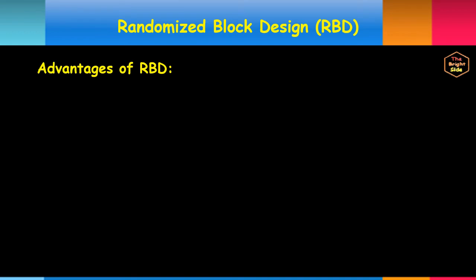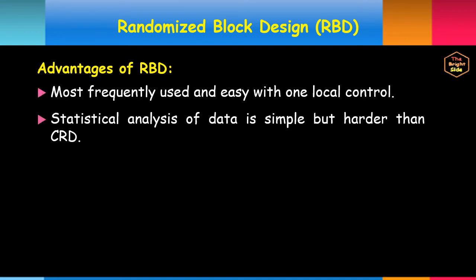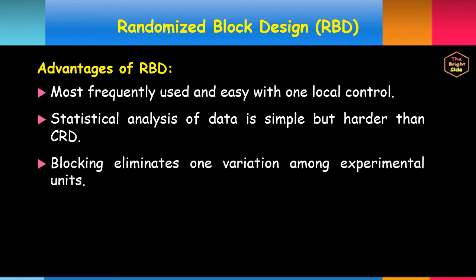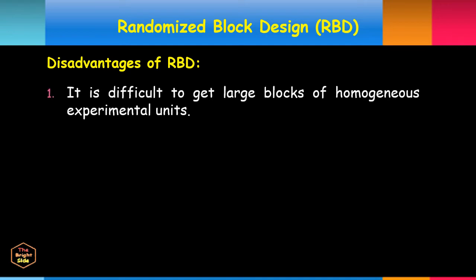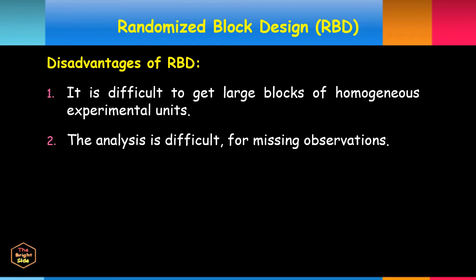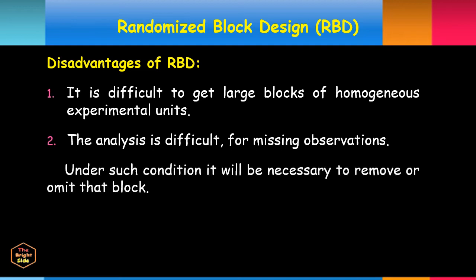The Randomized Block Design has been most frequently used since it is easy to design experiments with one local control. Statistical analysis is simple but slightly more complex than CRD. RBD eliminates one assignable cause of variation among experimental units by using local control or blocking, though error DF in RBD is lesser than CRD due to removal of DF for blocks. When treatments are large, getting large homogeneous blocks is difficult, and missing observations complicate the analysis.